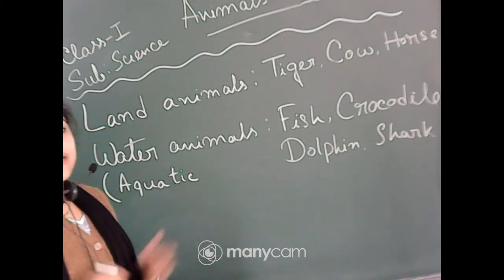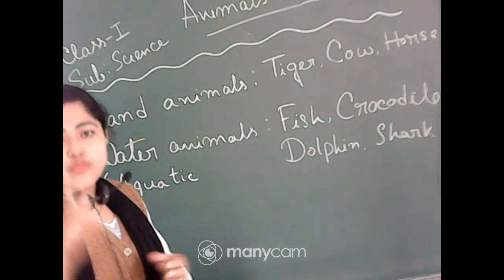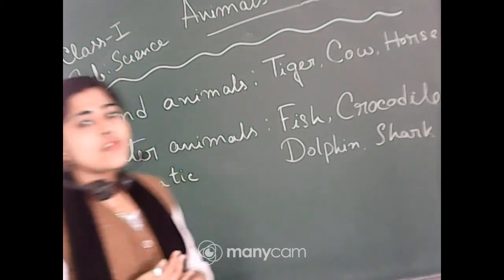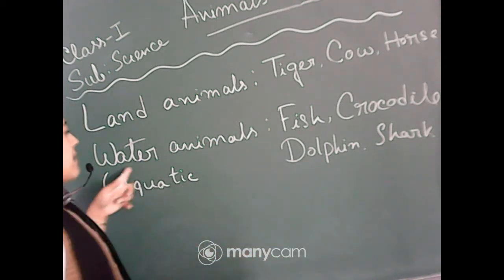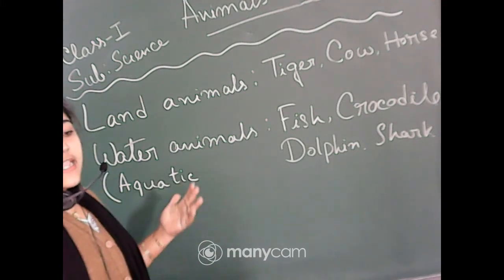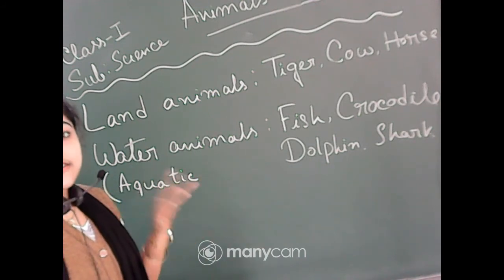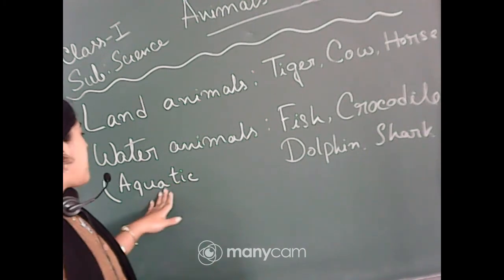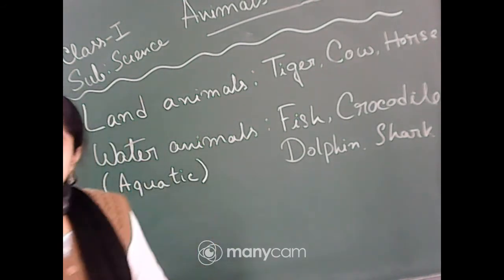That extra name is not in your book, but you can learn it. It's like having two names — a nickname and an official name. Here, water animals also have two names: we call them water animals, and we can also call them aquatic animals. A-Q-U-A-T-I-C.